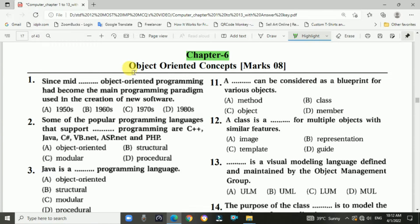Chapter 6, Object-Oriented Concepts. It's an 8 marks chapter, so let's start. First question: Since mid-blank, object-oriented programming has become the main programming paradigm used in the creation of new software.